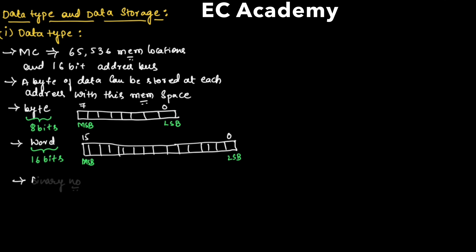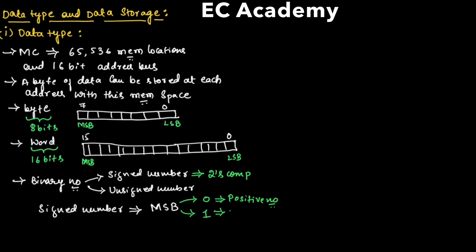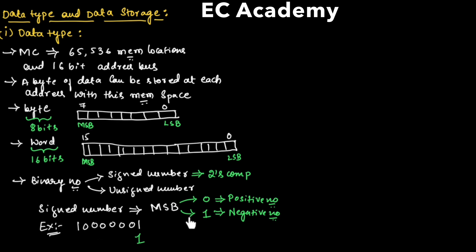If we consider a binary number, it can be represented as a signed number or an unsigned number. A signed number is represented in the form of 2's complement. In a signed number, we observe the MSB bit — if MSB is 0, it is a positive number, and if MSB is 1, the number is negative. For example, if LSB is 1 and MSB is 1, the number is negative.